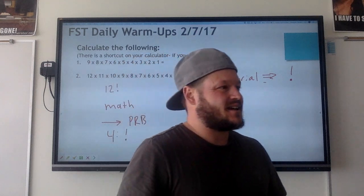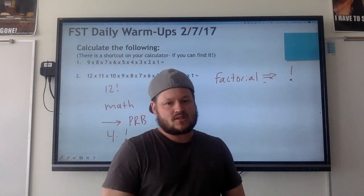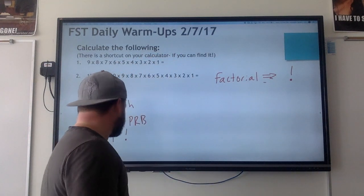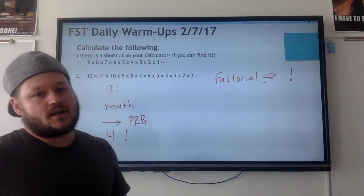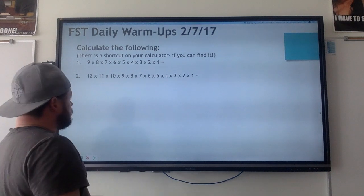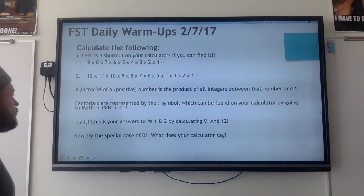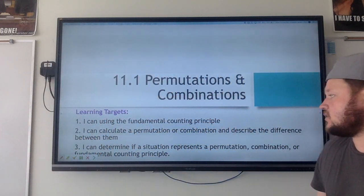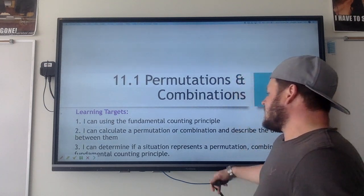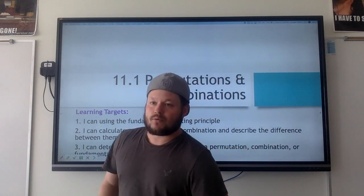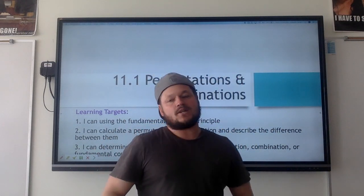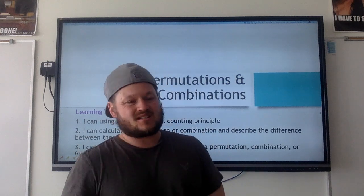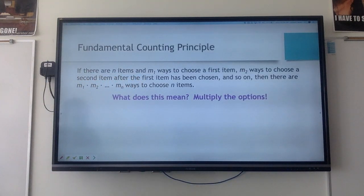You're not really going to do factorials a lot — there are factorials in permutations and combinations, but I'm going to give you the shortcut so you don't have to use the long formula. Here are your learning objectives: you're going to be able to use the fundamental counting principle, calculate permutations and combinations, and most importantly, you're going to be able to tell me when to use permutation, when to use combination, and when to use counting principle. That's probably the hardest thing in this section, but all in all it's not too bad.